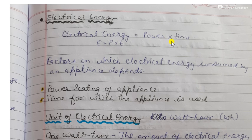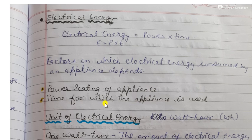Electrical energy is equal to power multiplied by time: E = P × T. The factors on which electrical energy consumed by an electrical appliance depends are the power rating of the appliance and how much time the appliance is used. If we know the power rating and the time, we multiply both these factors to obtain the electrical energy.